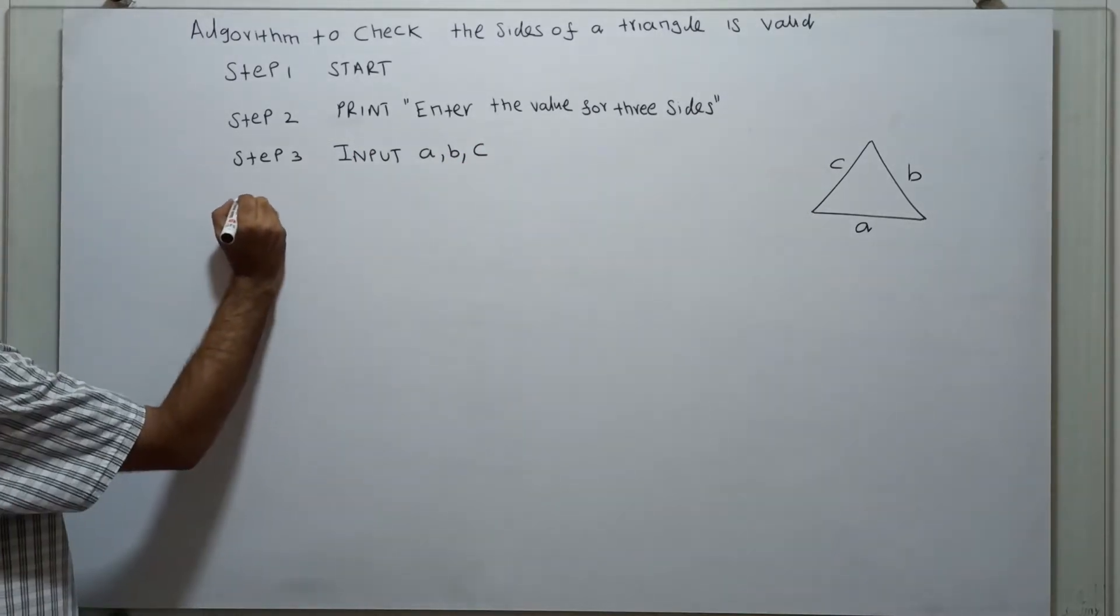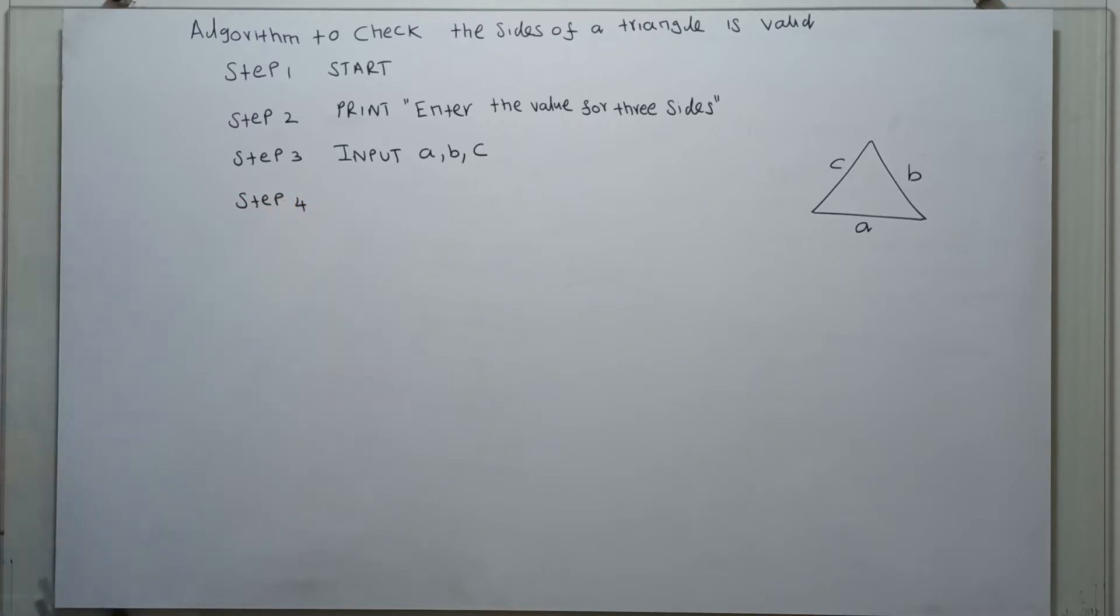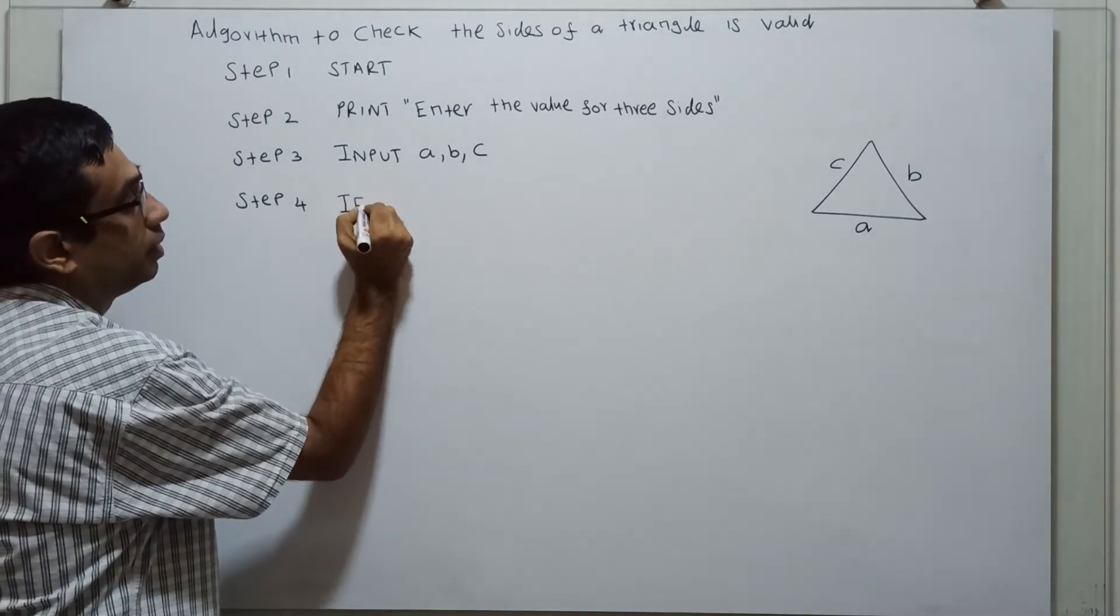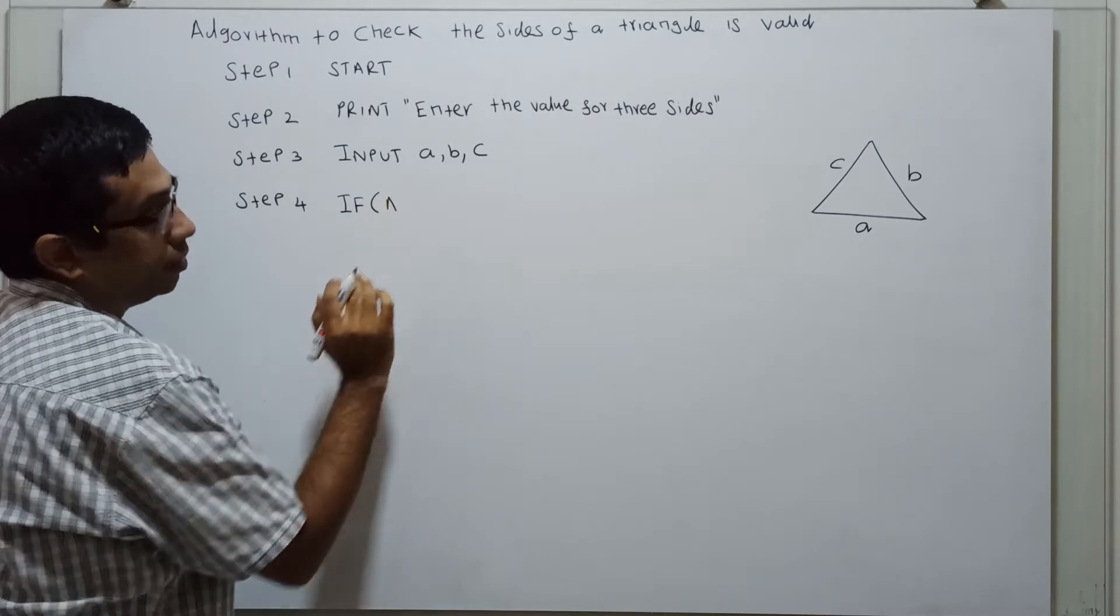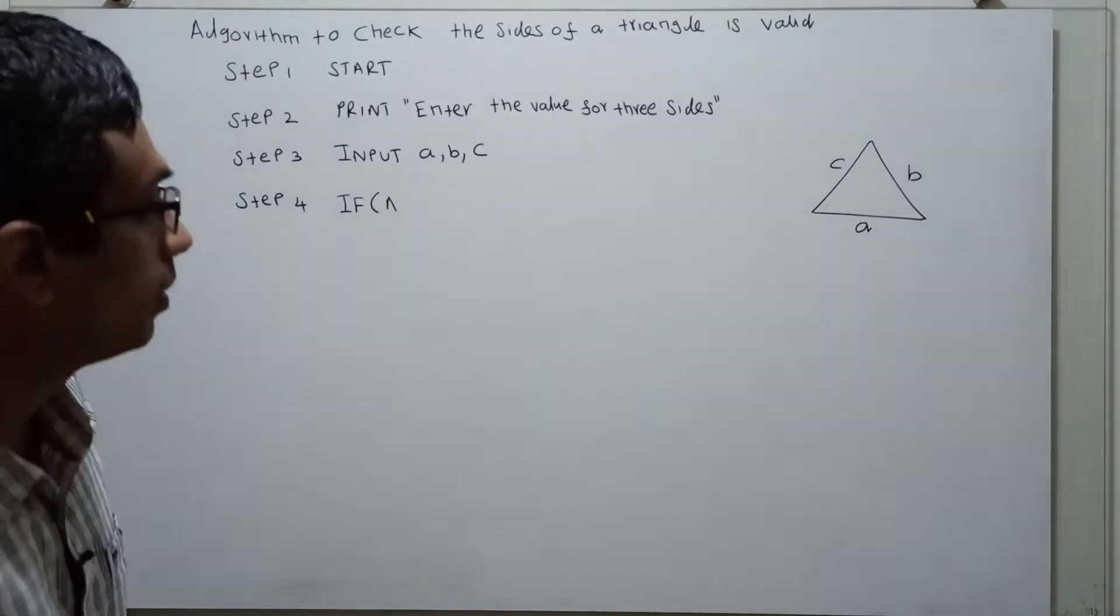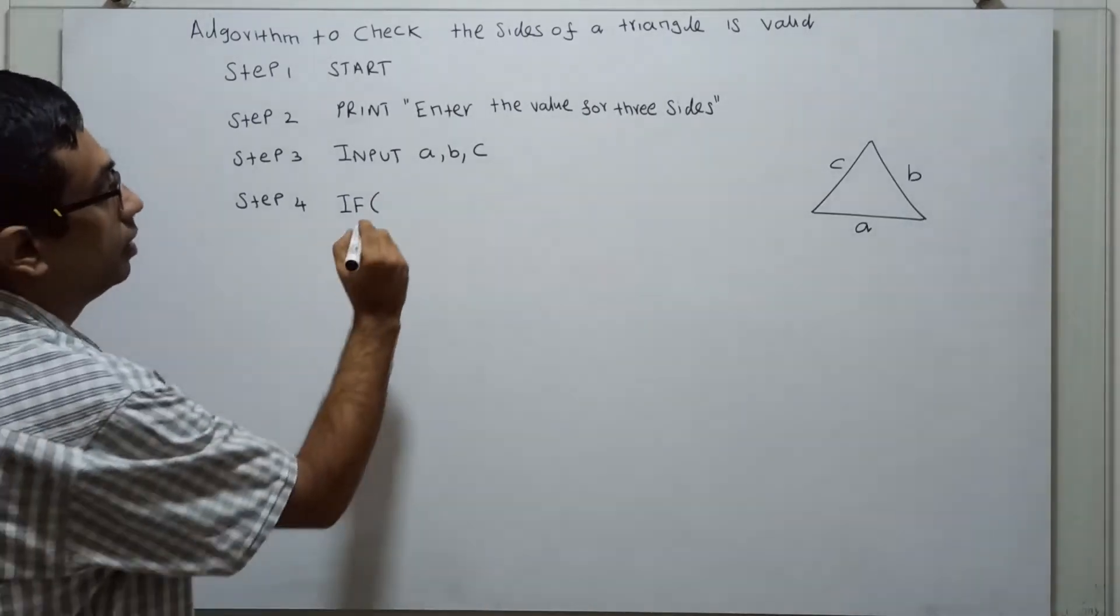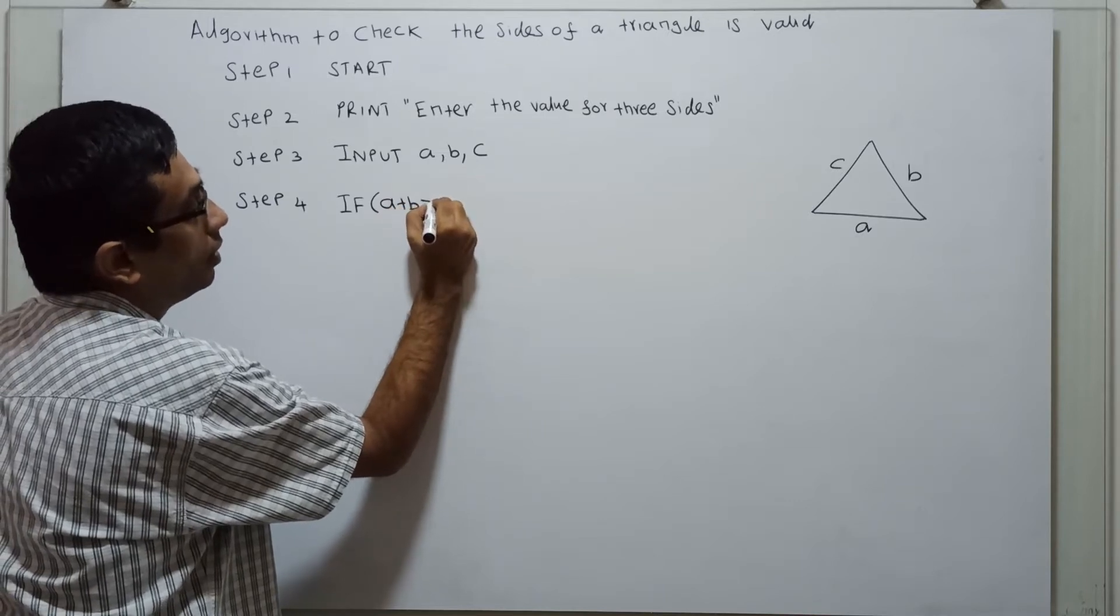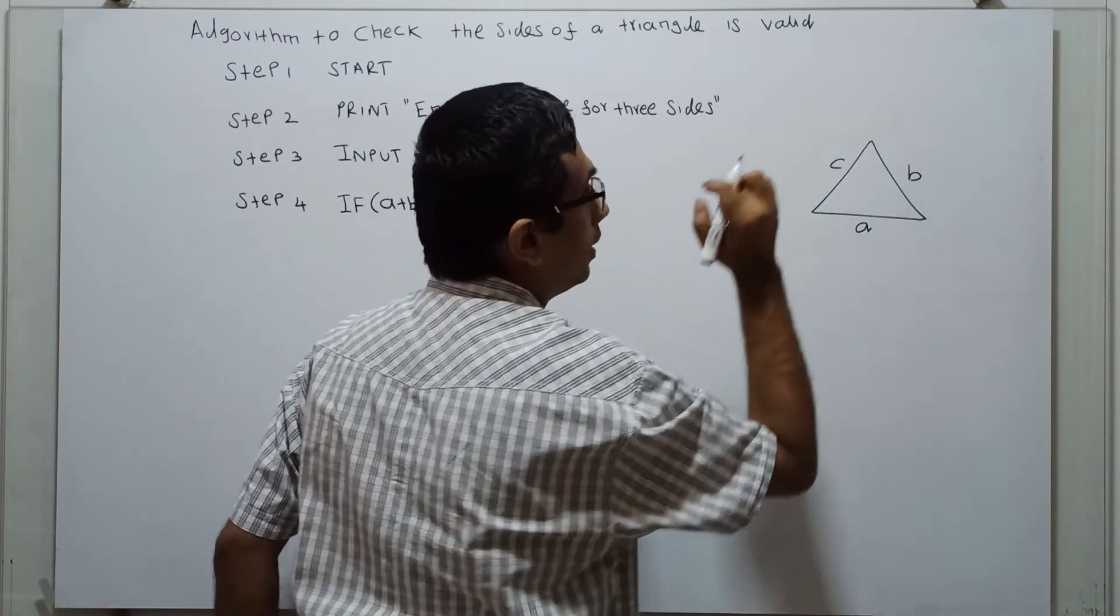Now we have to check the three sides. I will tell the condition. If A plus B greater than C. A plus B must be greater than C.